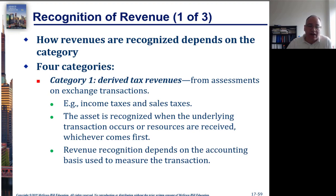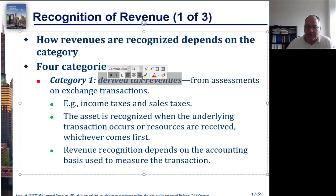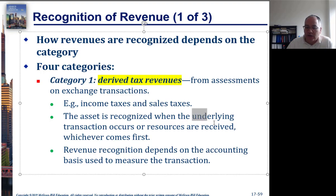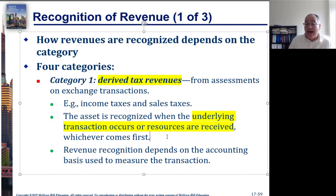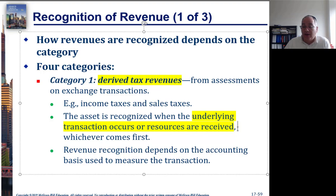We have four categories of non-exchange revenue. Category one — the most important — is derived tax revenues, which includes things like income tax and sales tax. Revenue is recognized when the underlying transaction occurs or resources are received, whichever comes first. For sales tax, the transaction occurs when the underlying sale takes place. For income taxes, it's more difficult because you don't know the amount in advance, so recognition is based on when resources are received or when an estimate can be made.